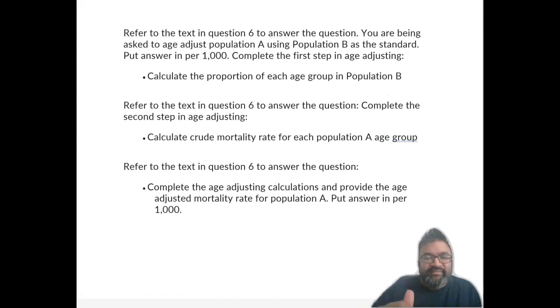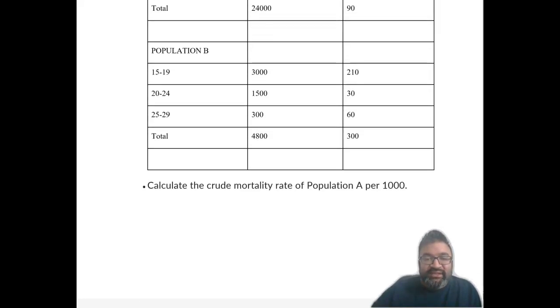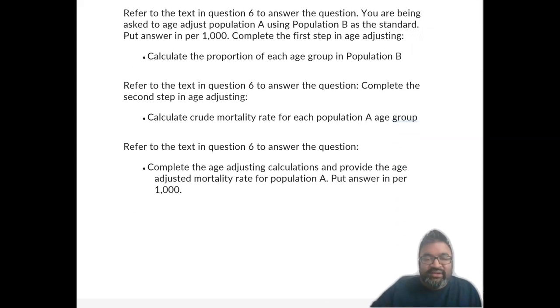So the next question is stating, refer to the text in question 6 to answer the question, complete the second stage and age adjusting. So now we're trying to figure out the crude mortality rate for each population A age group. And the crude mortality rate has been calculated. Now complete the age adjusting calculations and provide the age adjusted mortality rate for population A. Put answer in per thousand. So let's revisit this one more time here.